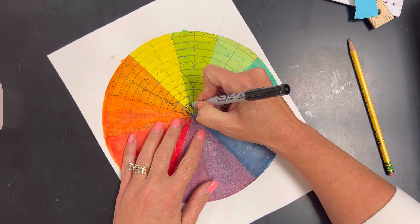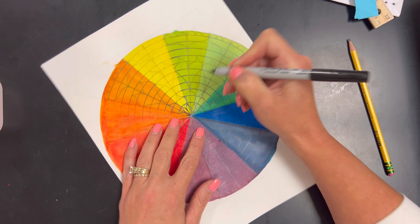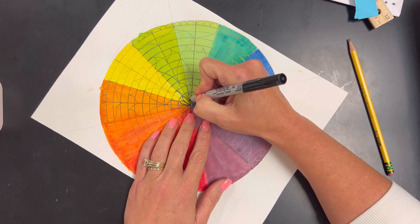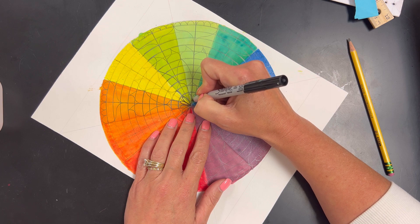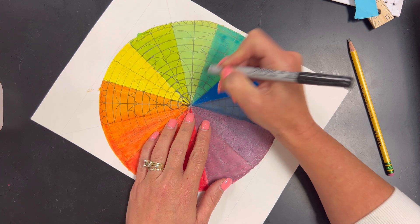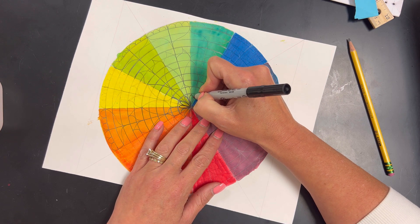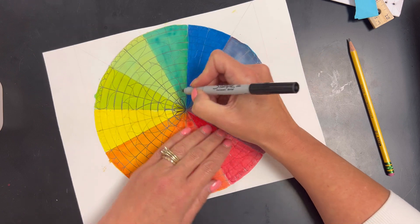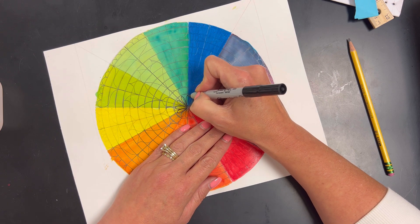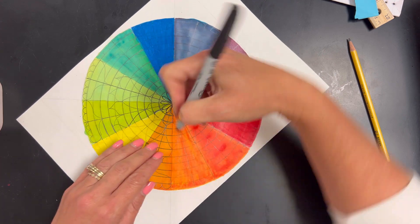When you're drawing in your patterns and outlining them, turn your paper as you go. Get really used to turning your paper. I find a lot of times I have a hard time getting students to turn their paper, but you're going to have a better result if you turn your paper rather than trying to turn your hand.